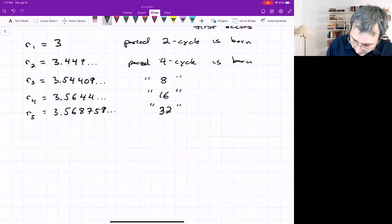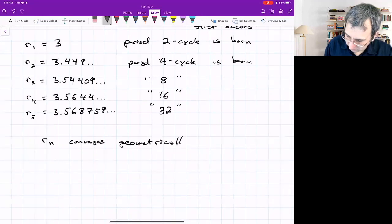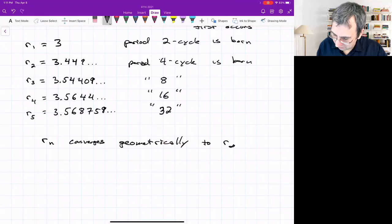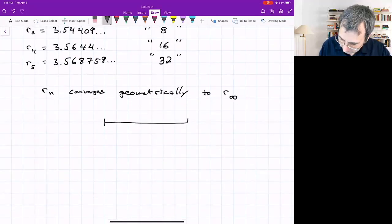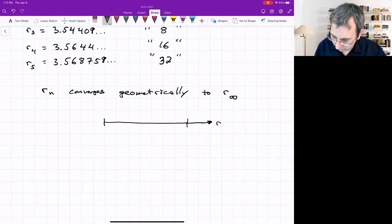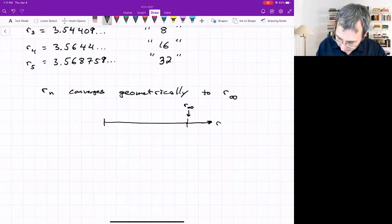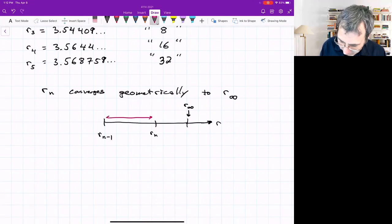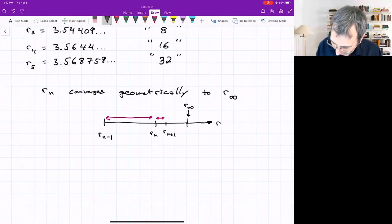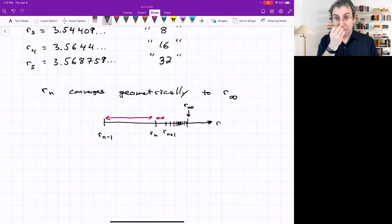R_n converges geometrically to some point called R_infinity, which Robert May referred to as the accumulation point. If we sketch the interval, this is r. At this point, the accumulation point, everything's going towards R_infinity. Here's R_n, here's R_{n-1}. The length of that first gap between the values, the next value R_{n+1} is a smaller gap, and the gaps keep getting smaller and smaller, accumulating at R_infinity.